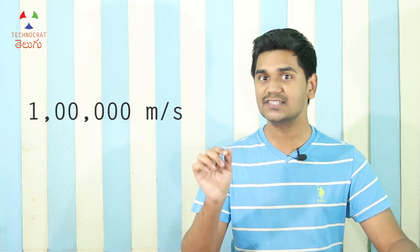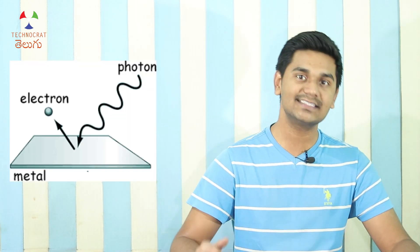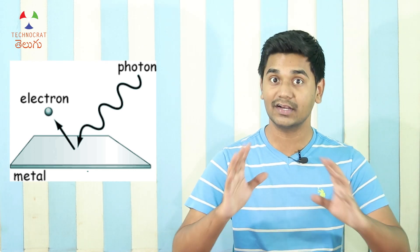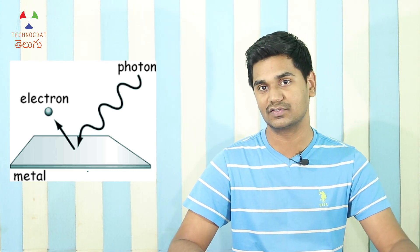In a conductor, electrons move at a speed of about 1 lakh meters per second. Now, light travels at 3 lakh km per second in a vacuum. So light is about 3 times faster. Light also has a dual nature — Einstein showed it behaves both as a wave and as a particle called a photon. This gives us a lot of information to encode in light.